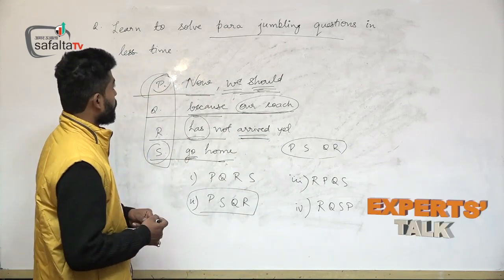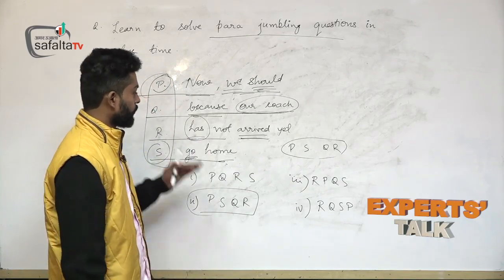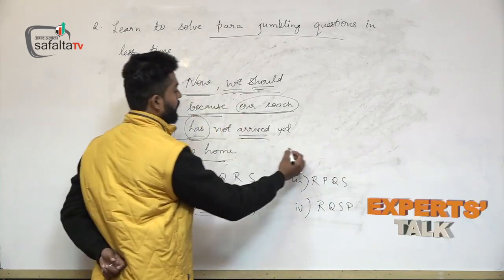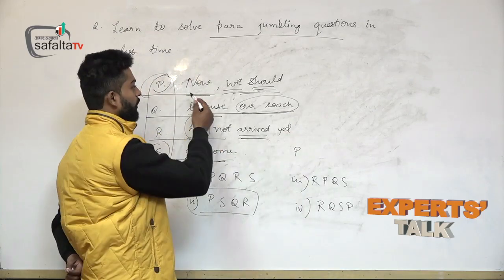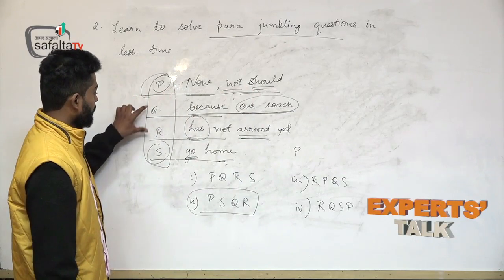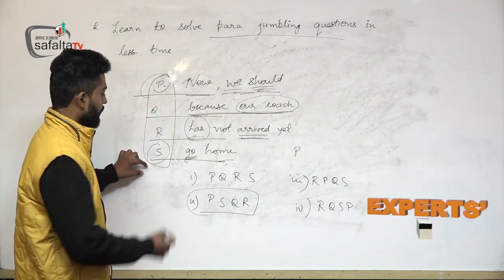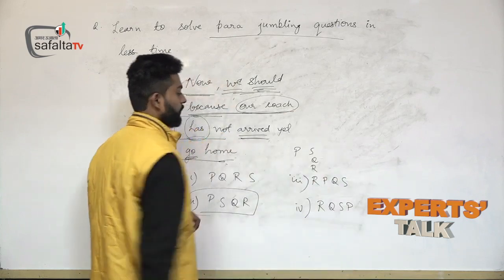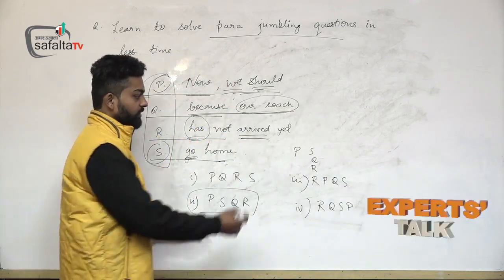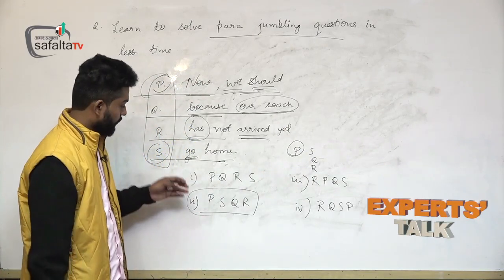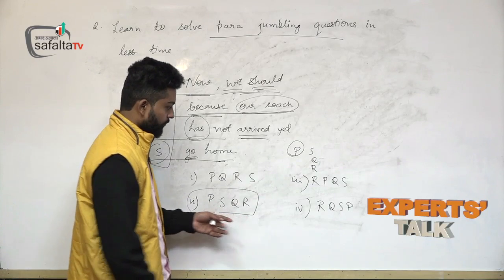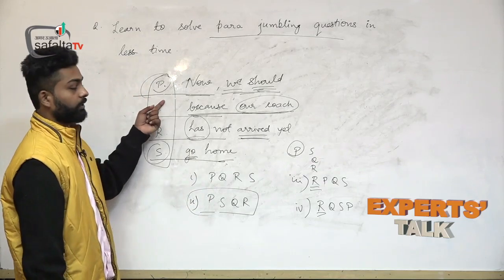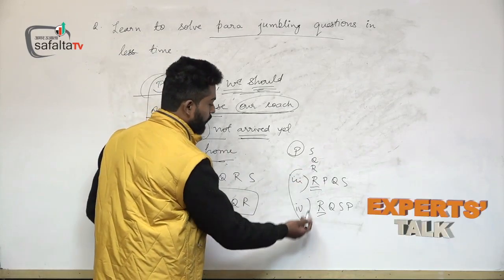If you want to solve this question quickly: as soon as you find that the first sentence starts with P — 'now we should' — then after that there are three choices: Q, R, or S. Go for the options which have P in the first place. Here PQRS and PSQR both start with P. The other options start with R, so if you are confident that P should be the first sentence, please do not go for those options.